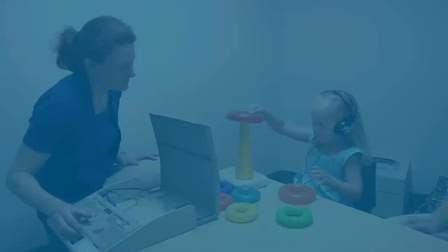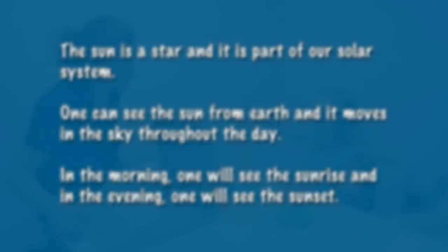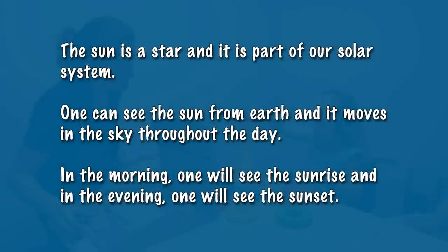Here is an example of speech that has been filtered so some of the high frequencies are missing: 'The sun is a star, and it is part of our solar system. One can see the sun from Earth, and it moves in the sky throughout the day. In the morning, one will see the sunrise, and in the evening, one will see the sunset.' Now here is the same speech example with all of the filtered parts put back in: 'The sun is a star, and it is part of our solar system. One can see the sun from Earth, and it moves in the sky throughout the day. In the morning, one will see the sunrise, and in the evening, one will see the sunset.'